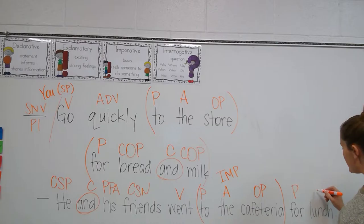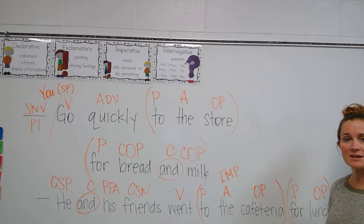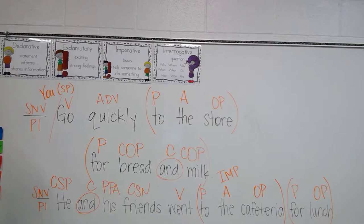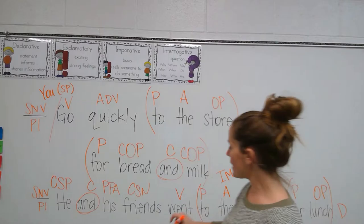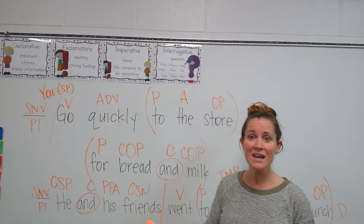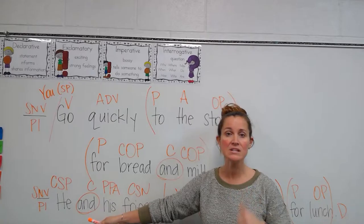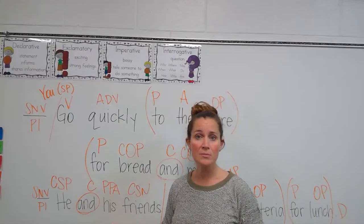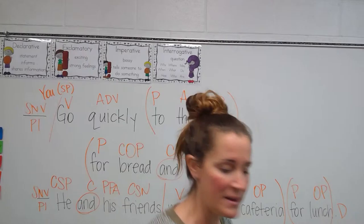For lunch — 'for' is a preposition. For what? Lunch. Lunch is a noun, so it can be the object of our preposition. We've now classified everything in this sentence. We write that it is a subject-noun-verb pattern one, declarative sentence, and we divide our complete subject from our complete predicate. We've shown what our two conjunctions are — one in each sentence — and that they are combining two things: here the objects of the preposition, and here the subject pronoun and subject noun.